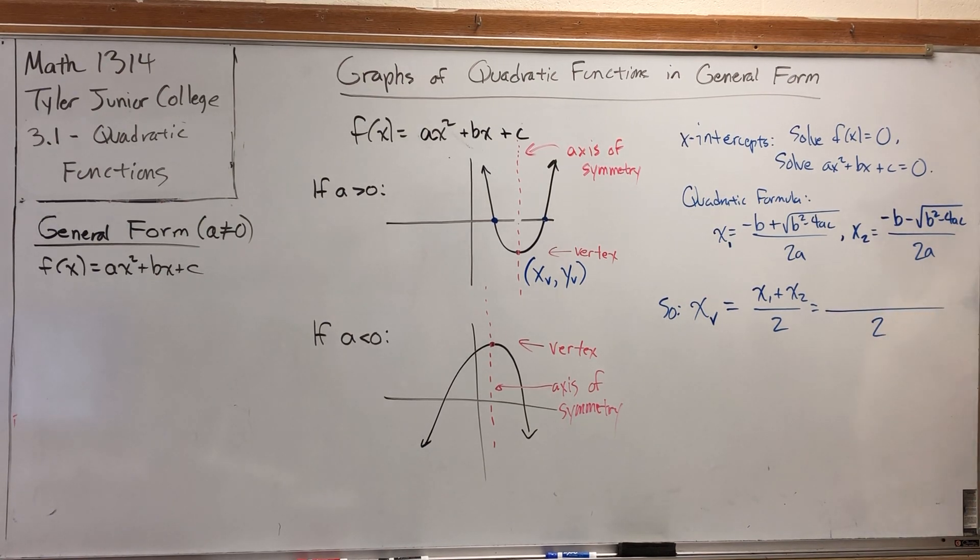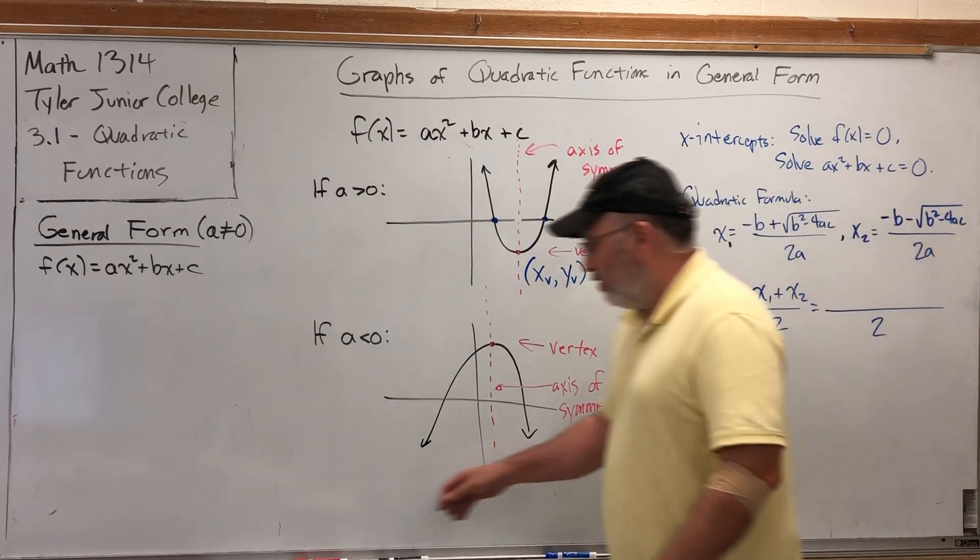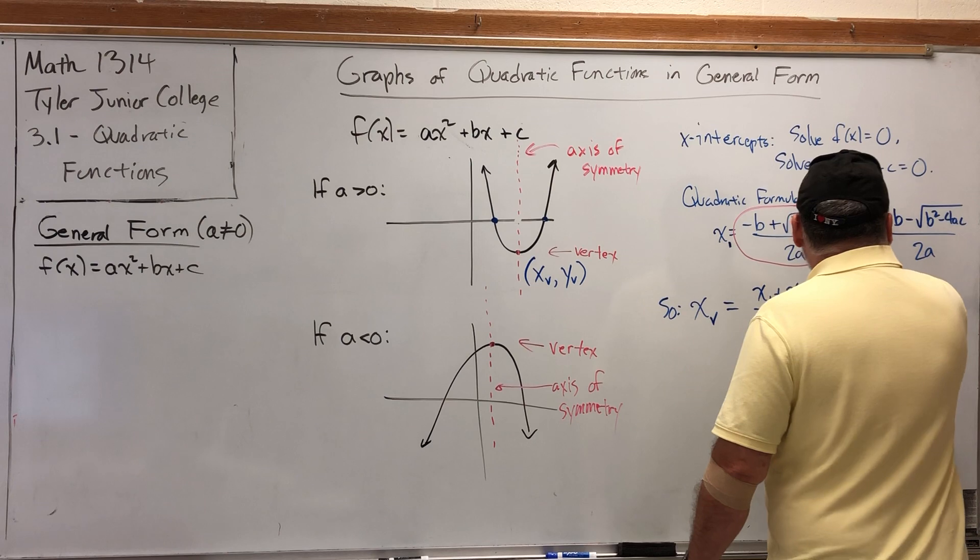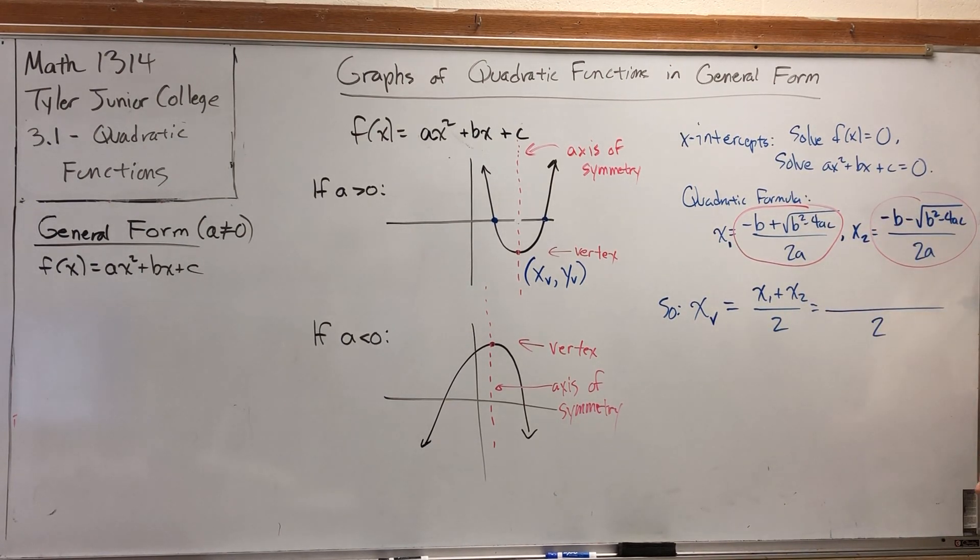Adding these two expressions is easier than it looks. Number one: I'm adding two fractions that already have a common denominator, so their sum will have the same denominator. In the numerators, there are four terms: -b, +√(...), -b, and -√(...). When I combine them, the two -b terms give -2b, but the two square roots are opposites and cancel. So adding these x-intercepts gives -2b/2a. These two twos cancel, leaving -b/a.